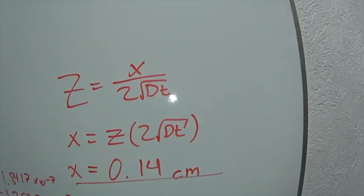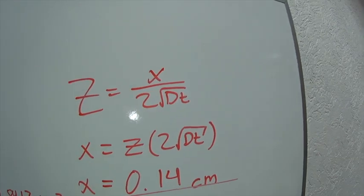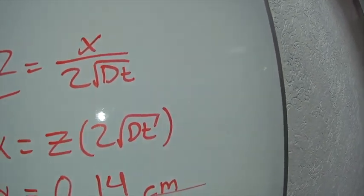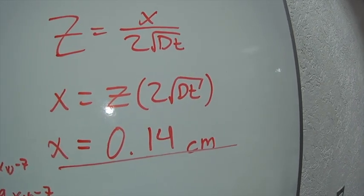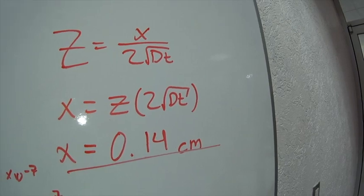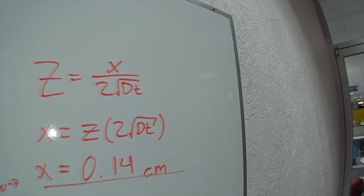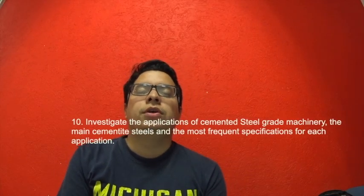Afterwards, we apply the formula for carburization depth C, substituting the diffusion coefficient D and the time, and we obtain an X of 0.14 cm as our carburization depth. The cementation process is used to take steels with a low percentage of carbon and increase their mechanical properties. One example is for pieces such as cams or pinions, where we need hardness and strength, so we use cementation to give normal steel those mechanical properties.